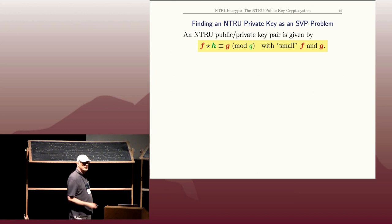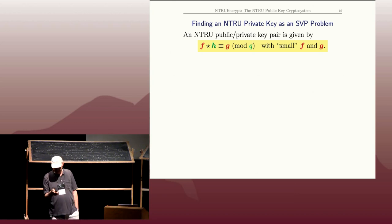What does an NTRU public-private key pair look like? Remember Alice's public key h fits into this equation where little f and little g are small. Since h was g times f inverse, moving to the other side: f times h equals g mod q.